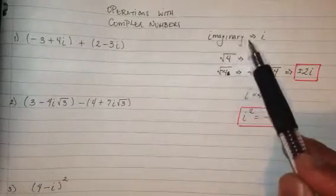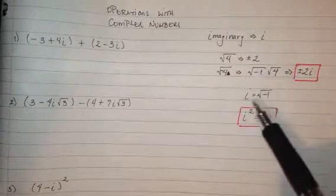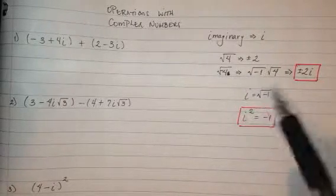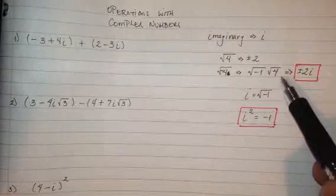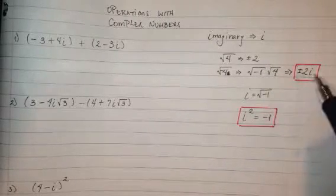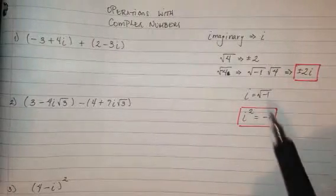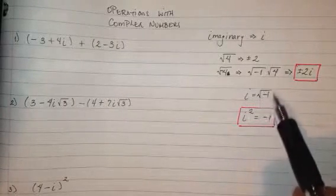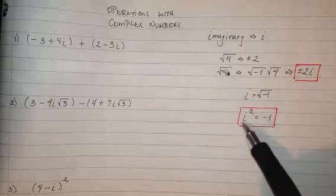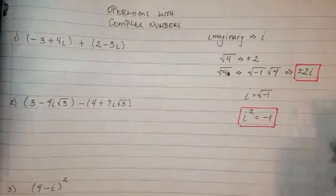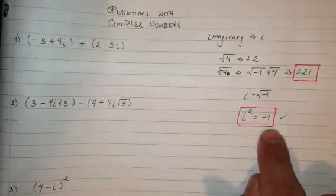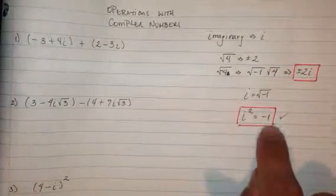Imaginary is represented by the letter i, and it represents the square root of negative 1. So the square root of negative 4 actually has the value of the square root of 4, which is plus or minus 2, but then because of the square root of negative 1, you have the i. So i equals square root of negative 1. Now if we square both sides, we end up with i squared equals negative 1. Your professors are going to expect you to know this — whenever you see i squared, you can just replace it with negative 1.